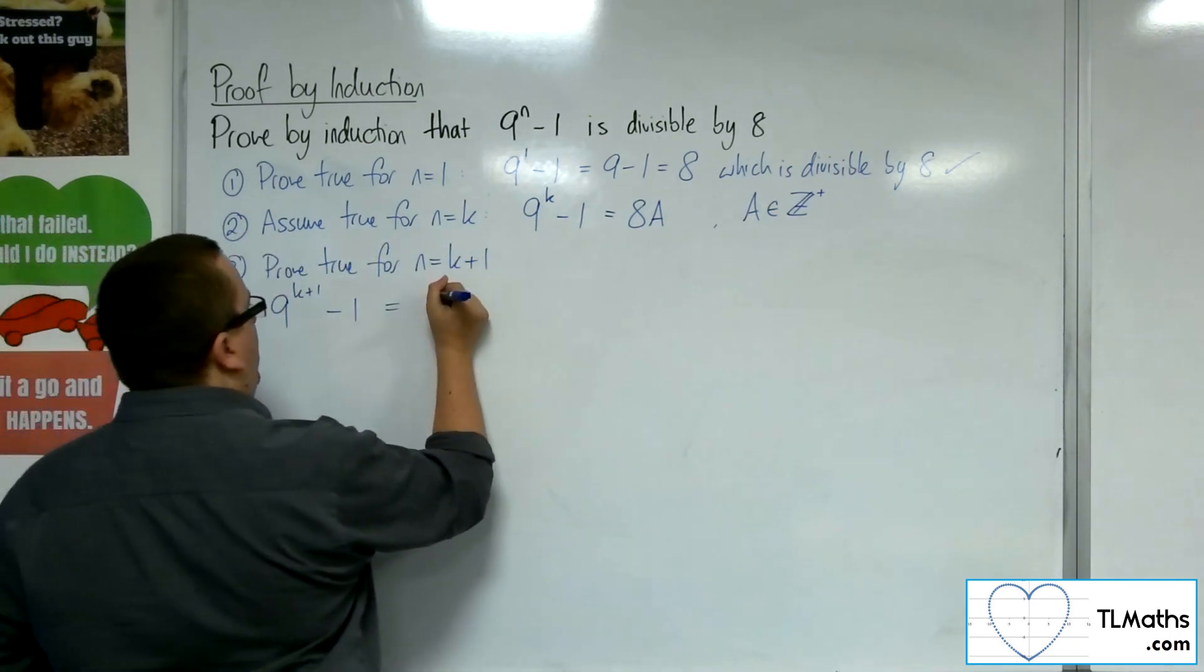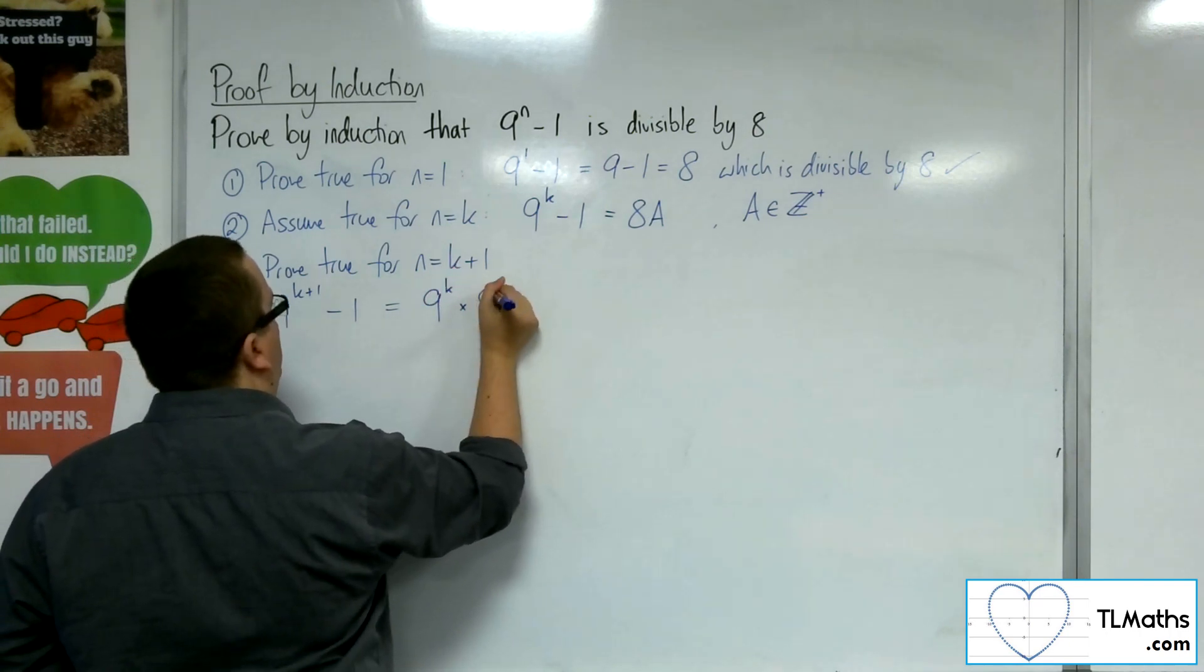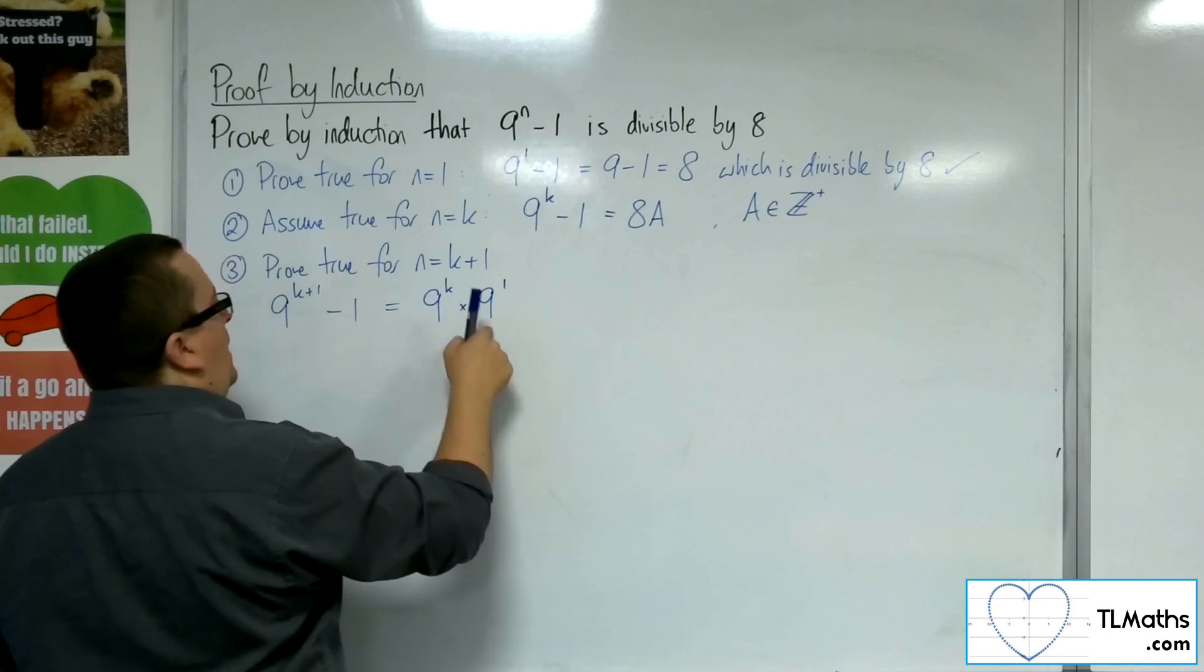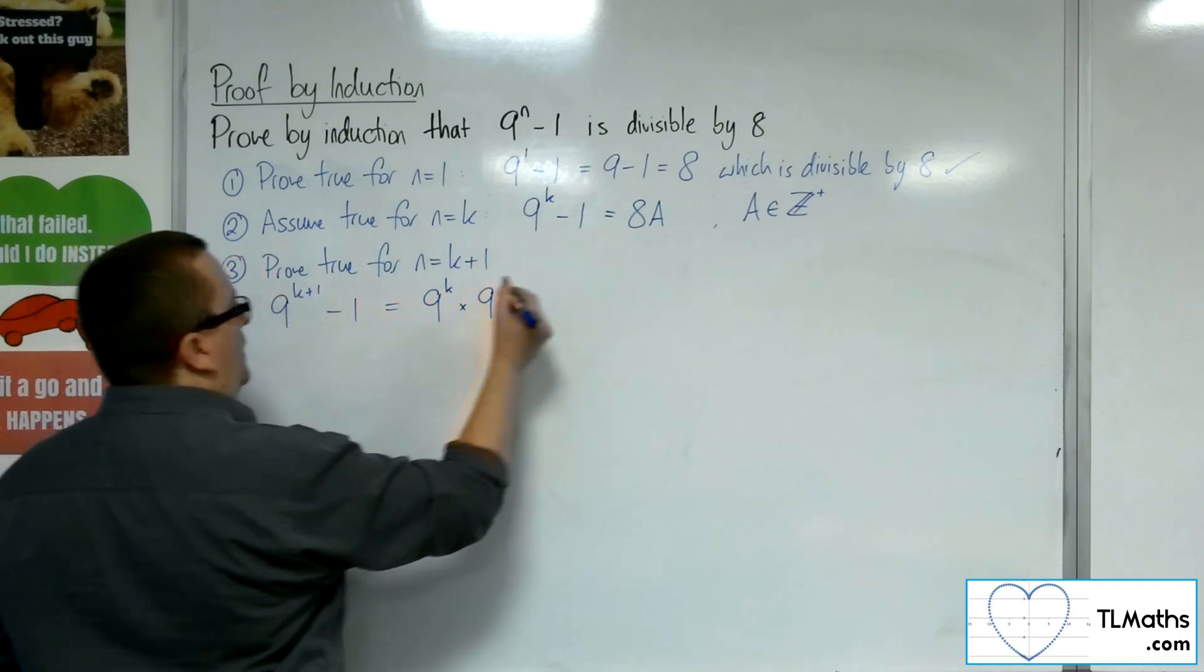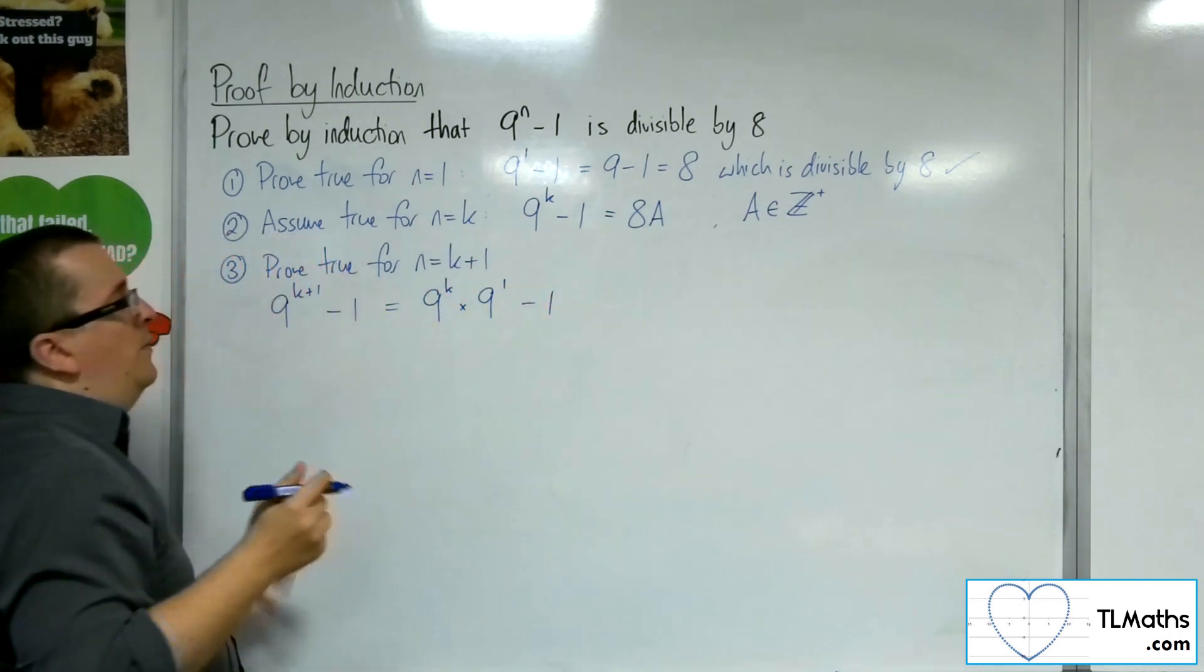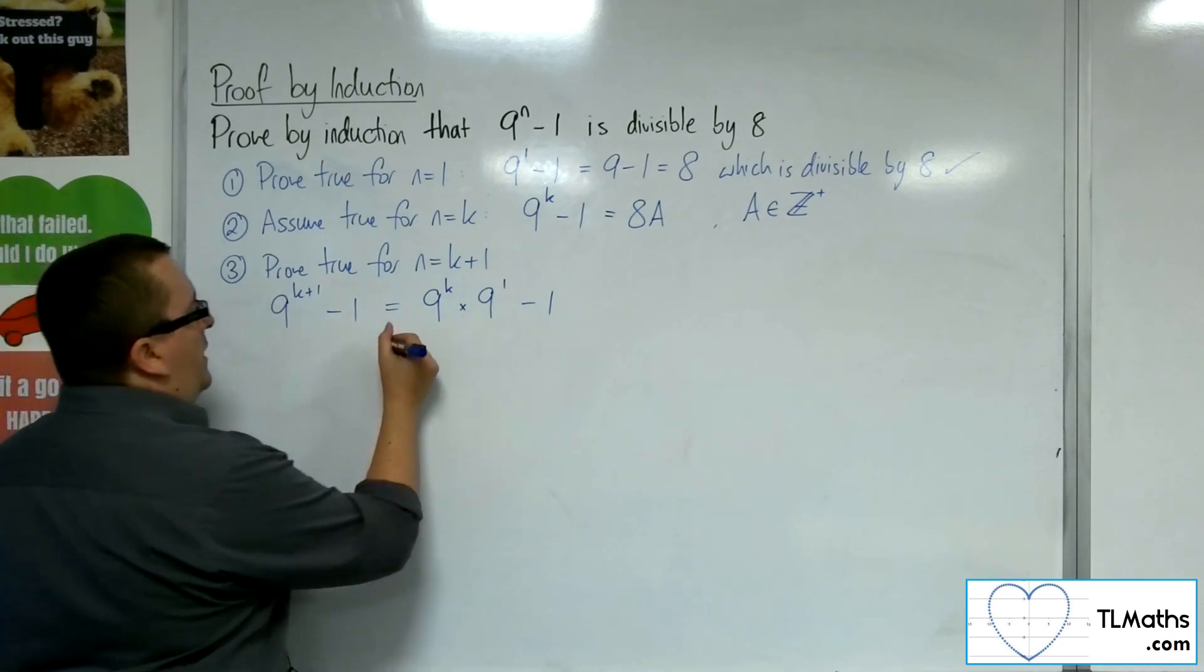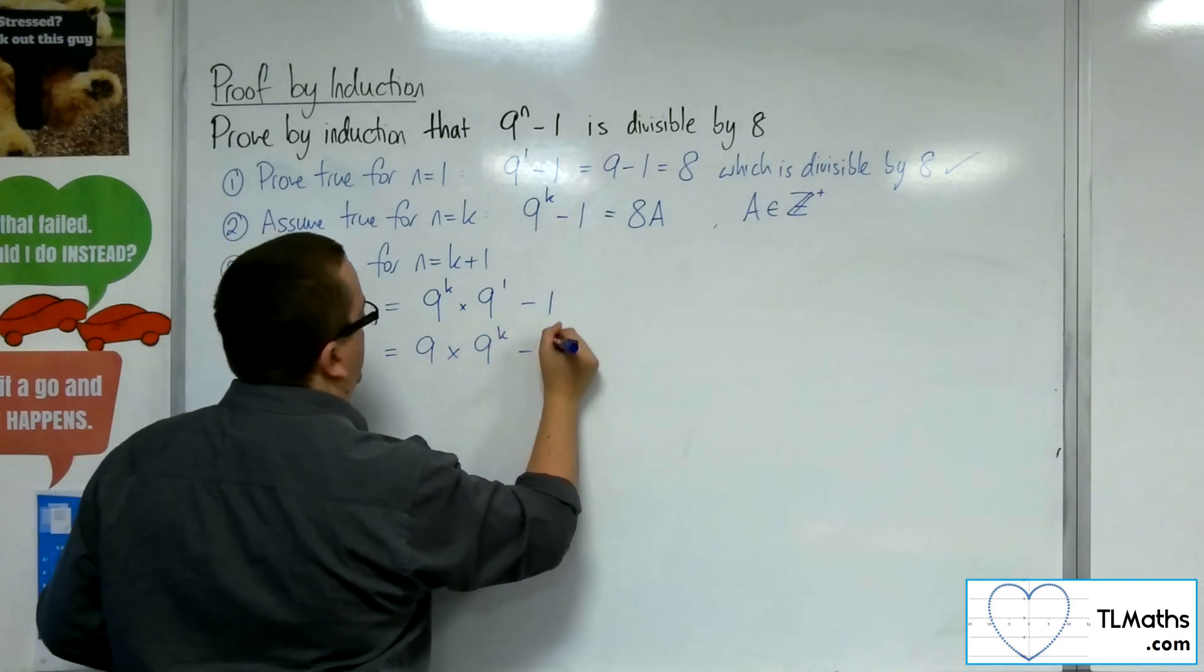What we need to remember is that when I write down 9 to the power of k plus 1, this is the same as writing down 9 to the k times 9 to the 1. They've got the same base number, and when you multiply them, the indices get added together. So that's what you need to remember. So what I've got here is 9 times 9 to the k take away 1.